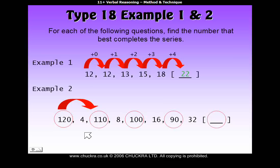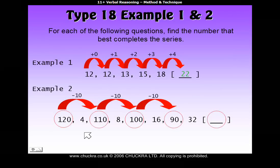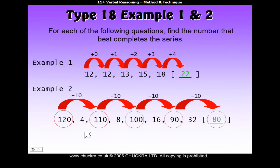So let's have a look. 120 to 110 is minus 10. 110 to 100 is minus 10. 100 to 90 is minus 10. So the next thing you have to do is minus 10 to continue the same pattern. So 90 minus 10 gives you 80, and that's your answer.